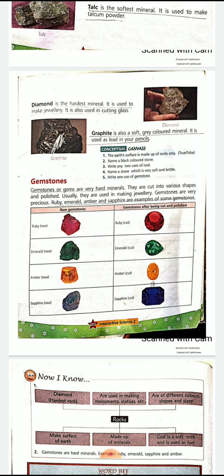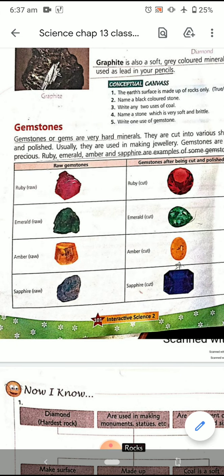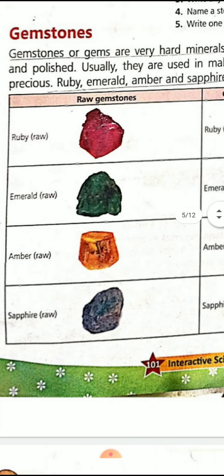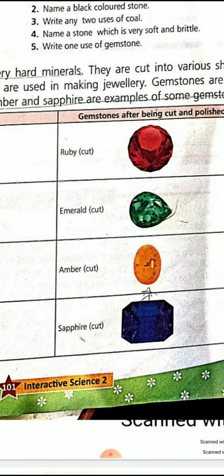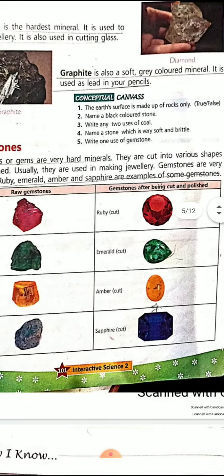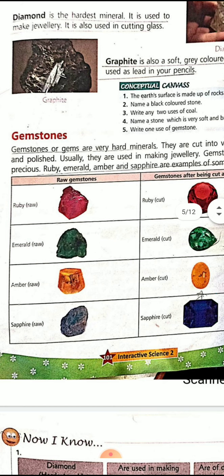Now let's read what a gemstone is. Gemstones are very hard minerals. They are cut into various shapes and polished. You can see the gemstones are generally like this in their raw form, but when they are cut and polished you get the real gemstone. Usually they are used in making jewelry — that is the main purpose of gemstones.